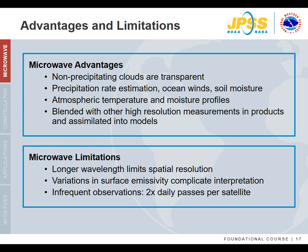That was a quick tour of passive microwave remote sensing. The major advantage is its use even in the presence of clouds. Microwave is sensitive to important phenomena such as precipitation type and rate, ocean surface winds, sea ice presence, and soil moisture — not readily obtainable with visible and IR measurements. Microwave also enhances temperature and moisture profile information, particularly over the ocean. Drawbacks include the longer wavelengths limiting spatial resolution, variations in land emissivity complicating interpretation, and less frequent observations compared to geostationary satellites. Follow-on modules will introduce current microwave sensors in orbit and example imagery highlighting product applications.